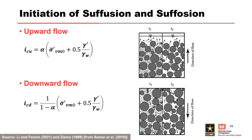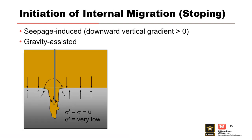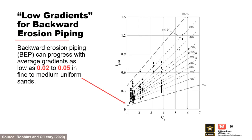Lee and Fannin in 2021 developed relationships for critical hydraulic gradient in one-dimensional vertical seepage, as shown on this slide. For internal migration, a downward gradient is needed to move eroded particles into the open defect, and there also needs to be enough seepage gradient in the defect to transport eroded particles to the exit. When preparing more and less likely factors, do not use qualitative terms like 'low gradient.' Backward erosion piping can progress with average gradients as low as 0.02 to 0.05 in fine to medium uniform sands. Always specify hydraulic head difference over seepage path length, or H over L.